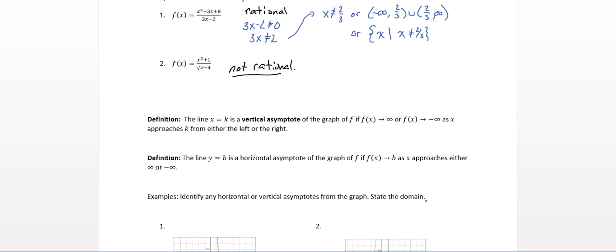Now rational functions have a couple of things that other graphs don't necessarily have. First of all, the line x equals k is a vertical asymptote of the graph of f if f of x approaches infinity or f of x approaches negative infinity as x approaches k from either the left or the right. So the graph kind of blows up near a specific x value. The line y equals b is a horizontal asymptote of the graph of f if f of x goes to b as x approaches either infinity or negative infinity. So vertical asymptotes look at what happens to y near a specific value. Horizontal asymptotes are looking at end behavior.